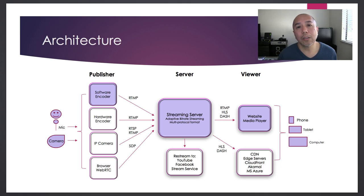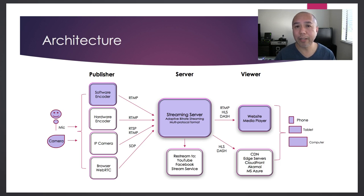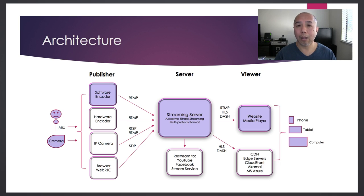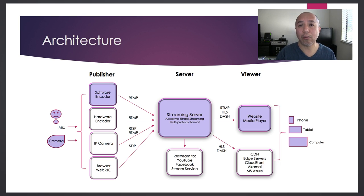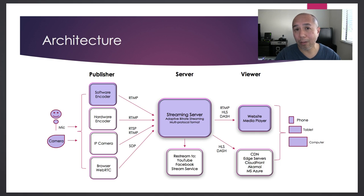If you don't want to use a PC, you can use a hardware encoder. Hardware encoders are devices specifically designed for streaming — that's all they do. Unlike a PC that handles word processing, browsing, and many other tasks, a hardware encoder's sole purpose is to stream to the streaming server. It has a web interface where you configure the RTMP server, port, username, password, app name, and streaming name.